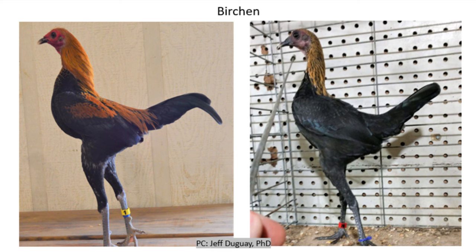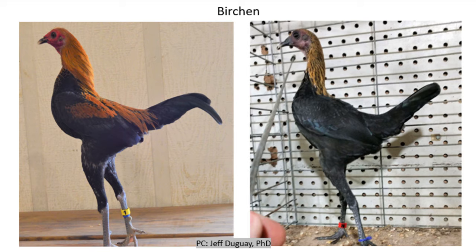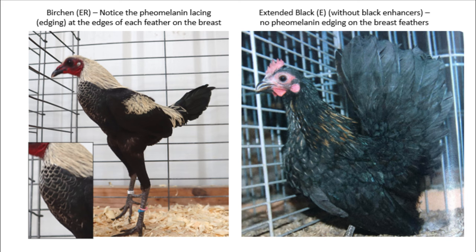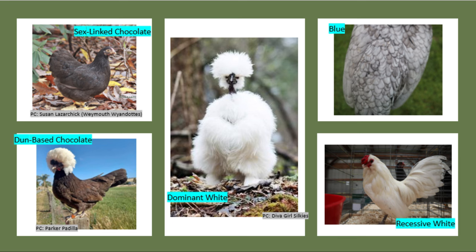The next E-Locus allele in the order of dominance is Birchen, represented with the gene symbol capital E superscript R. Extended Black and Birchen are very similar and were actually confused for each other for a long time, because Extended Black chickens without black enhancers tend to get the same gold or silver leakage on the neck. Black enhancers can also be used on Birchen-based birds to make entirely black chickens, such as the black variety found on Dutch Bantams. The blue, white, and dun genes can be added to create those varieties, just as they can on Extended Black.